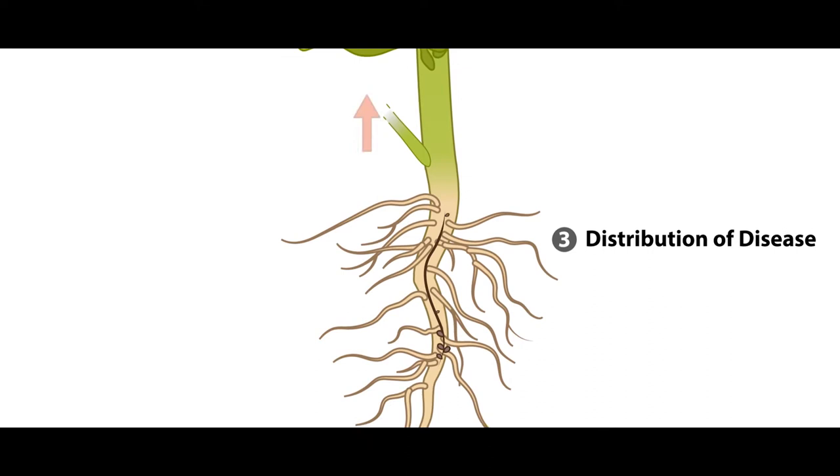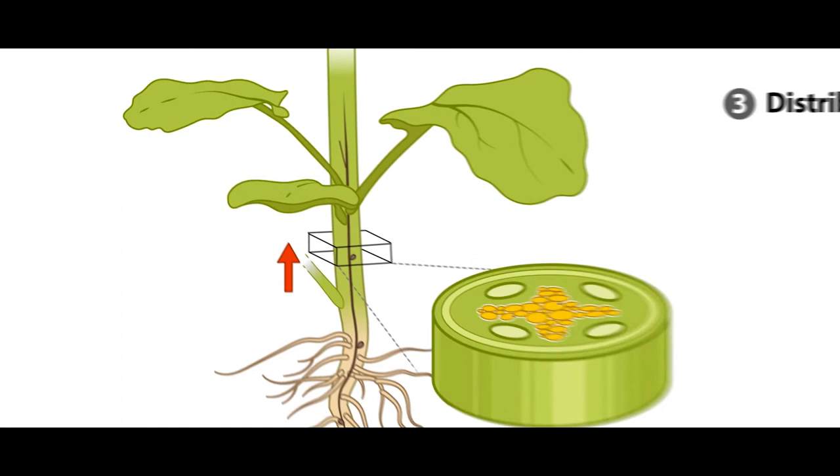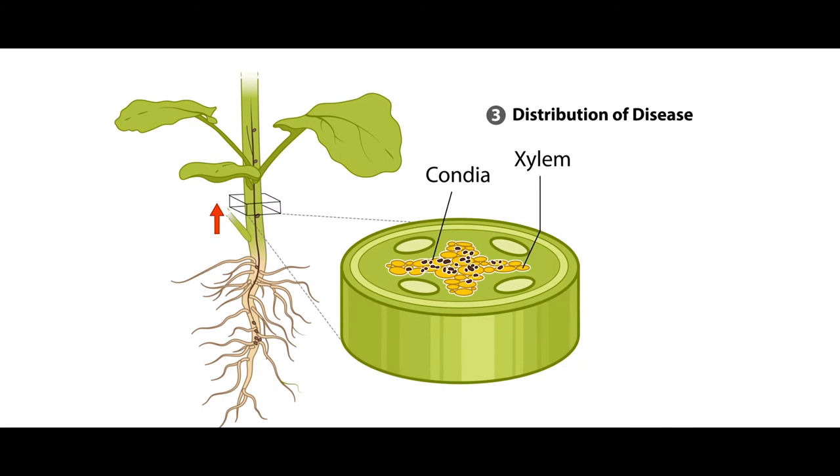After the hyphae multiply in the root, hyphae and single cell spores called conidia are produced locally in the xylem and move through the vascular system of the plant to multiply.